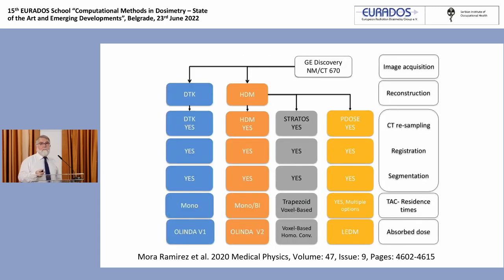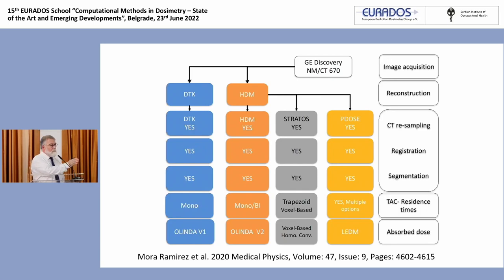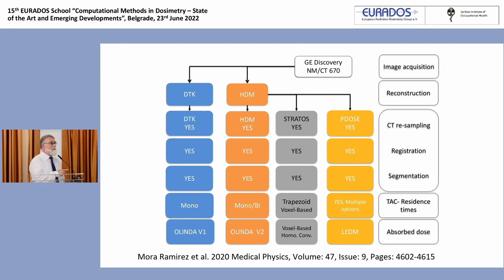When you want to compare them, you first have to define a common data set to be used with the different software. In this test, we used images from GE, so reconstruction was done with the GE dosimetry toolkit — resampling, registration, segmentation, time-activity curve fitting with mono-exponential only, since that was the only possibility at the time — then using Olinda version 1. For the other platform, we reconstructed images with Hermes HDM, then put them in HDM, Stratos, and Planet Dose from Dosisoft.